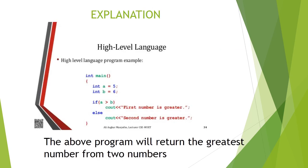There is an example of a high level language program. This program returns the greatest number of two numbers. As you can see, there are some English words which the computer doesn't understand, so we need to convert it first with a compiler, interpreter, or translator program. Then the computer can generate the output of this program.